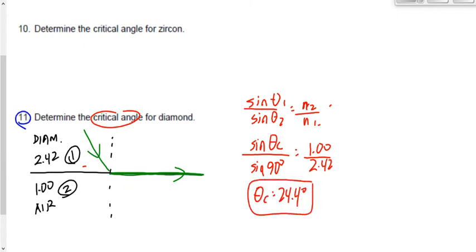The critical angle for crown glass, found in question number 9, was 41 degrees. The critical angle for diamond is 24 degrees. The critical angle for diamond is so much smaller because the index of refraction is so much bigger.